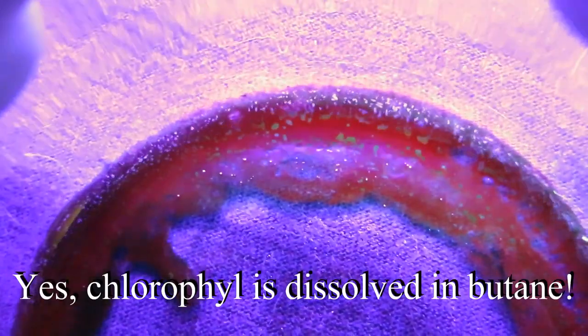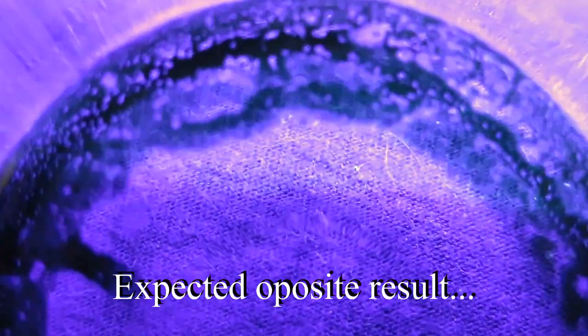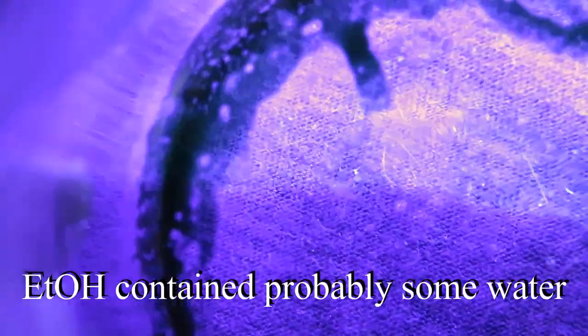So you can see this reddish fluorescence that is quite specific to chlorophyll. This is the butane fraction, even though you can see some orangey-green fluorescent blobs there.